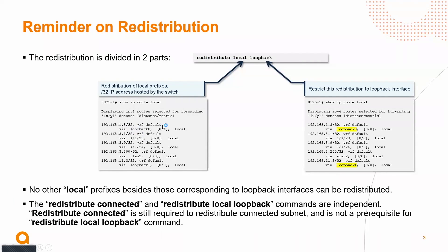The local designation covers over /32. This applies, for instance, when you have connected subnets and there is a host IP address handled by the switch itself that will appear as a /32 — but it is not a loopback. So only the loopback portion of the local information is redistributed.